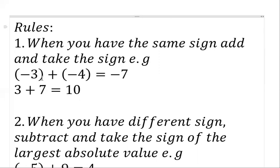Let's take another example: three plus seven. When you write a number, there is an invisible sign there which is plus. So any number you put down, the natural sign that is there is plus. We have three plus seven — just add: three plus seven gives you ten, and the natural sign that is there is plus. So when you have the same sign, just add the number and take the sign. That's rule number one.